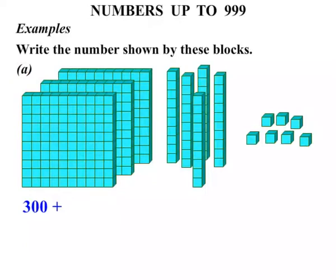Then we write plus. Now these longs they are worth 10 each. So let's count in tens. 10, 20, 30, 40, 50. So we are adding 50 with that. We write plus again.